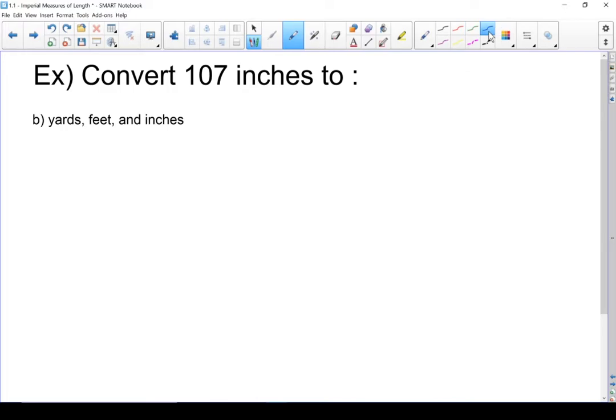Let's start with our conversion charts. 1 yard equals 3 feet. I could also use 1 yard equals 36 inches, but this time I'm not going to use that. The other one I need is 1 foot equals 12 inches. In Part A, we already figured out how many feet and inches that is. I've got 8 feet and 11 inches.